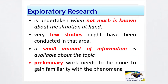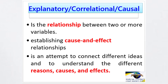The aim of exploratory research is to explore the phenomenon when there is little information or few studies available — that is, when not much is known about the situation. Preliminary work needs to be done to gain familiarity with the phenomenon. Explanatory research is sometimes called correlational, causal, or hypothesis testing research. Its aim is to determine the relationship between two or more variables and to establish cause-and-effect relationships. For example, if you want to determine the relationship between variable X and variable Y, the appropriate research type is explanatory.